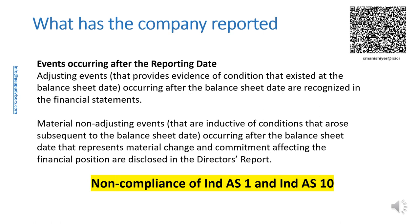A listed company has disclosed an accounting policy on events after the reporting period. Ind AS 10 defines events after the reporting period and identifies those events as either adjusting events or non-adjusting events. The company reproduces the requirements of the standard in summary form. This policy, after 1 April 2023, shall not meet the test of material accounting policy information.